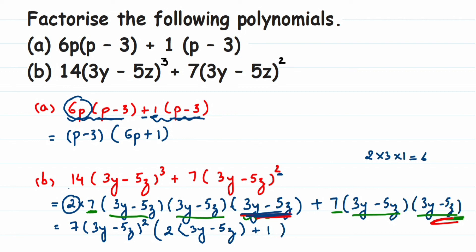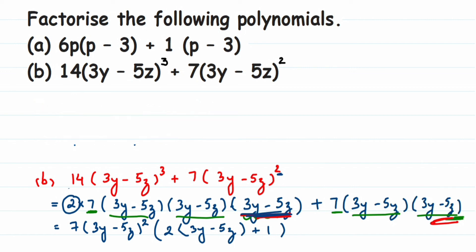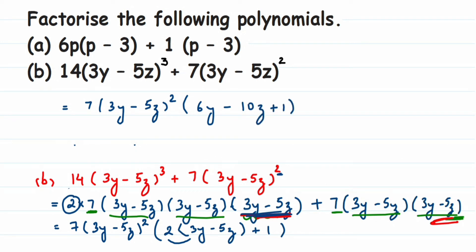So we have 7 into (3y - 5z) squared, into (2 into (3y - 5z) + 1). Multiplying out: 2 into 3y is 6y, and 2 into 5z is 10z. So the final answer is 7 into (3y - 5z) squared into (6y - 10z + 1). This is the factorization — we got 7 times a term times a term.